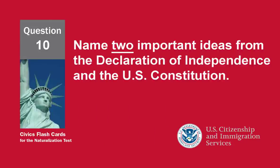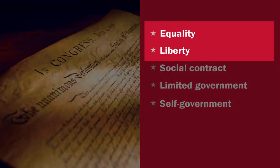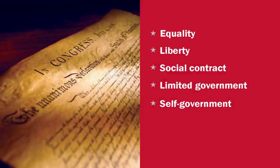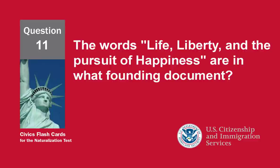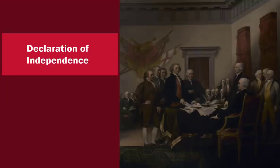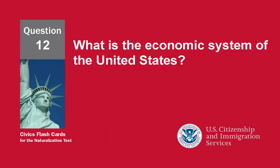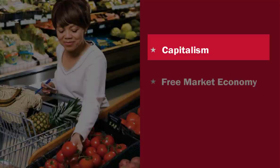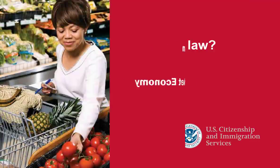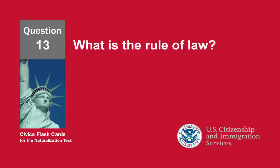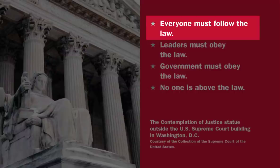Name two important ideas from the Declaration of Independence and the US Constitution. Equality and Liberty. The words 'Life, Liberty, and the Pursuit of Happiness' are in what founding document? Declaration of Independence. What is the economic system of the United States? Capitalism. What is the rule of law? Everyone must follow the law.